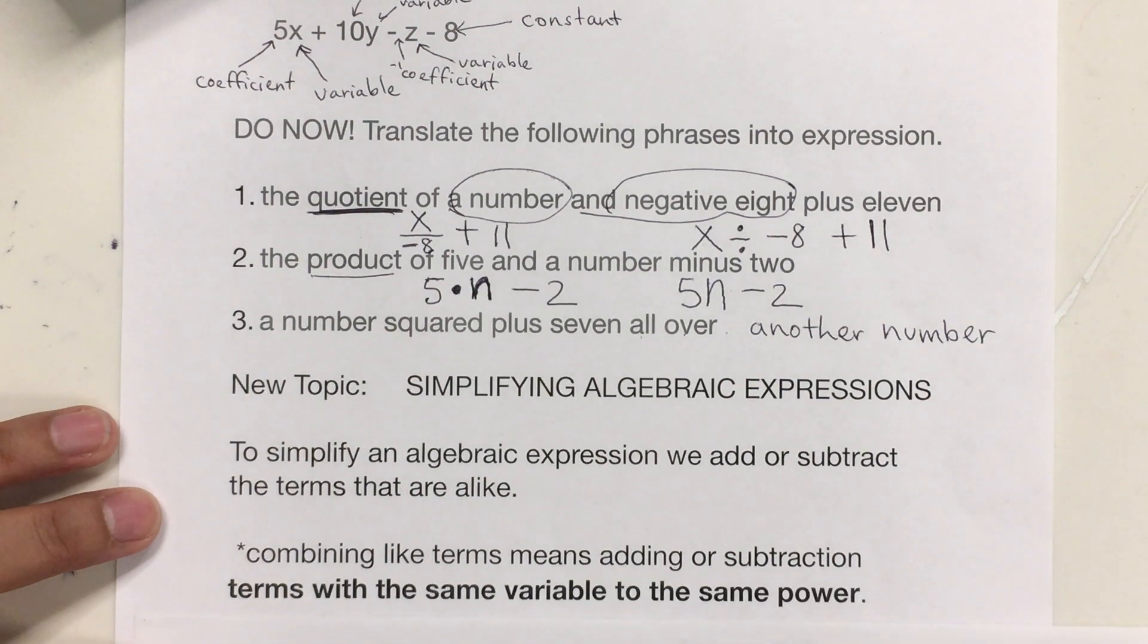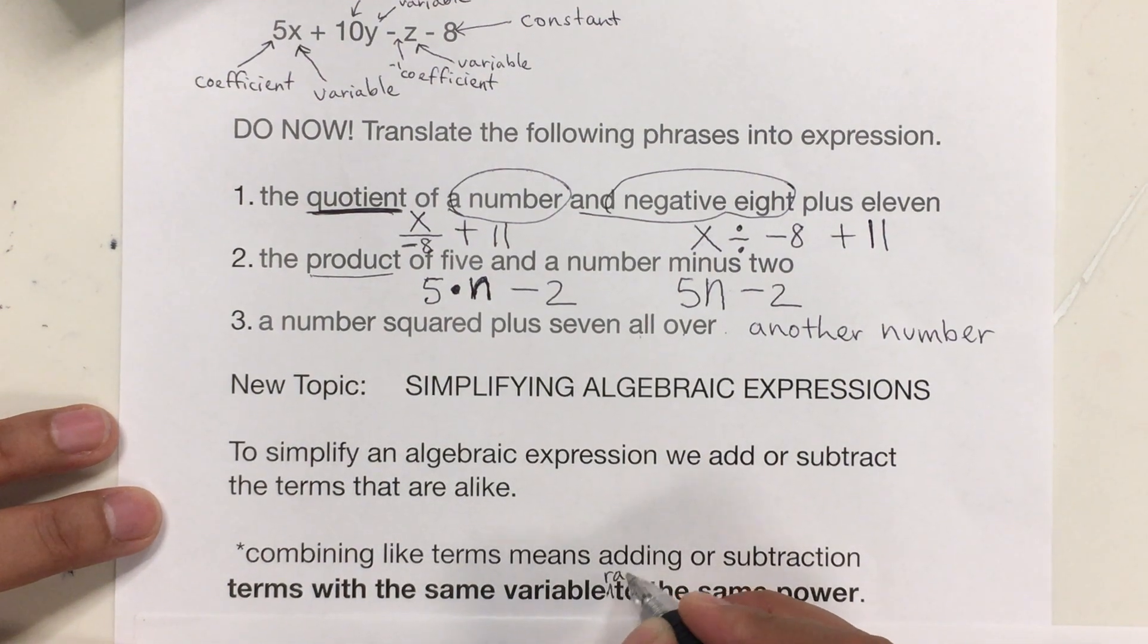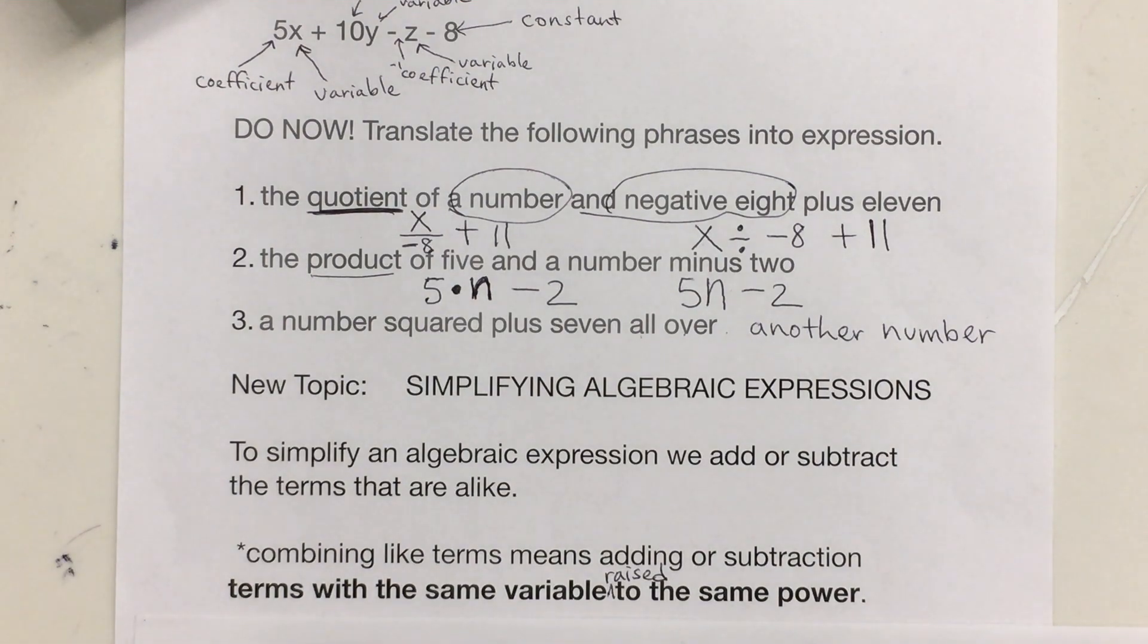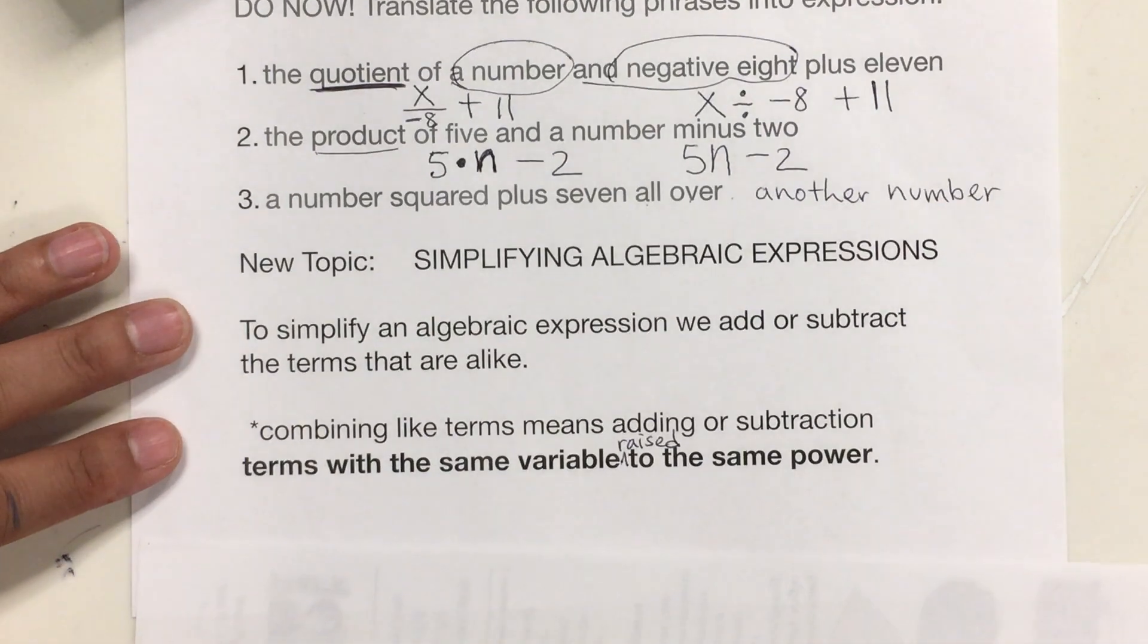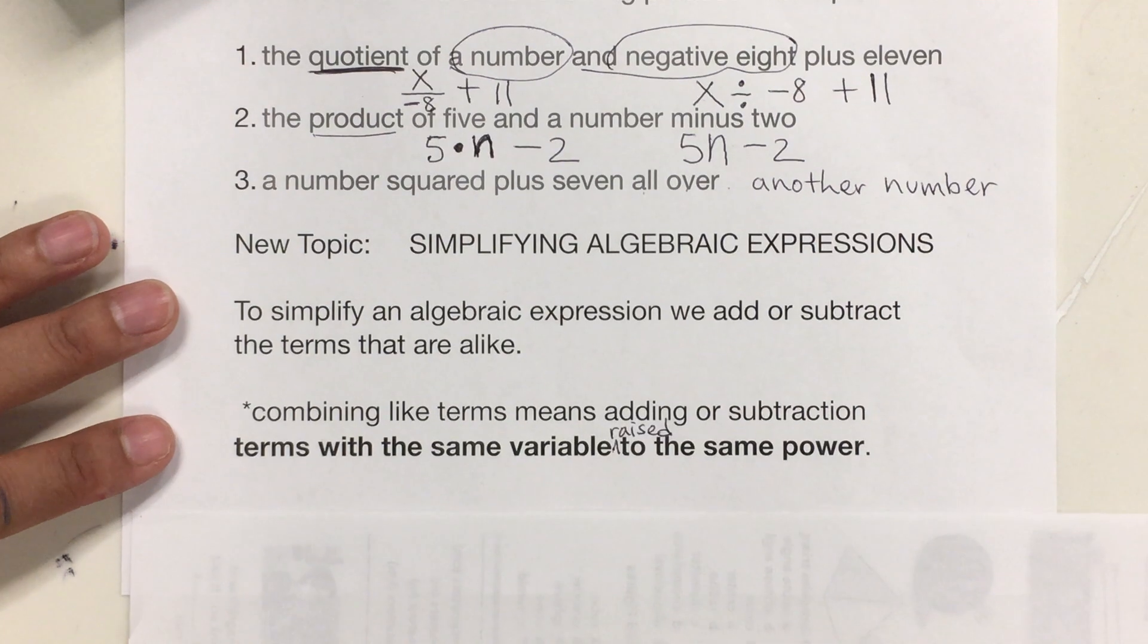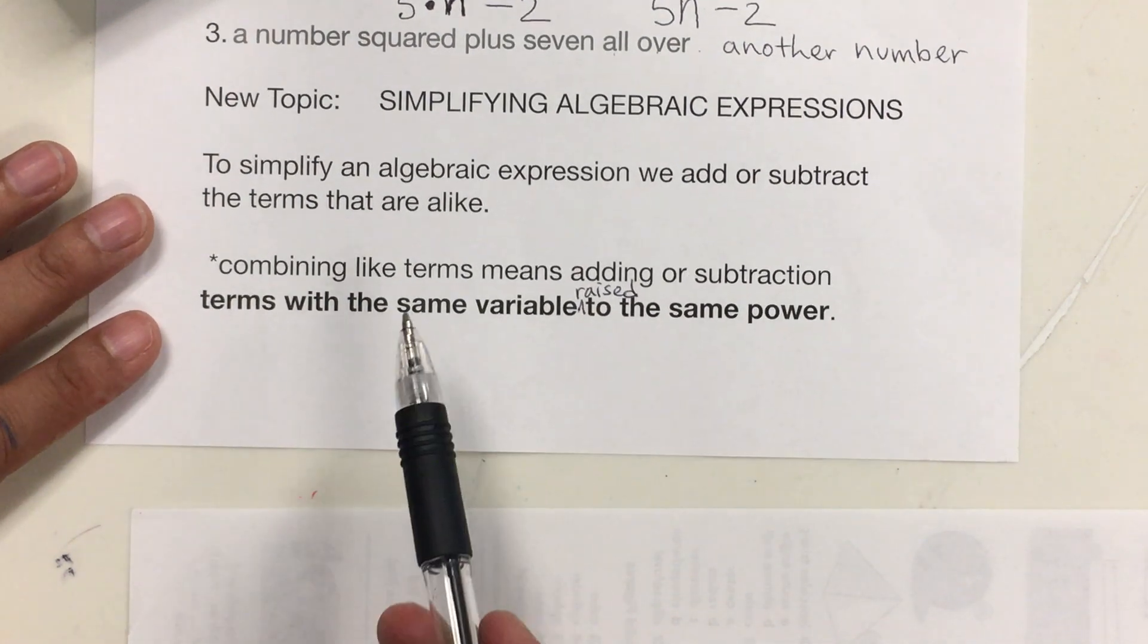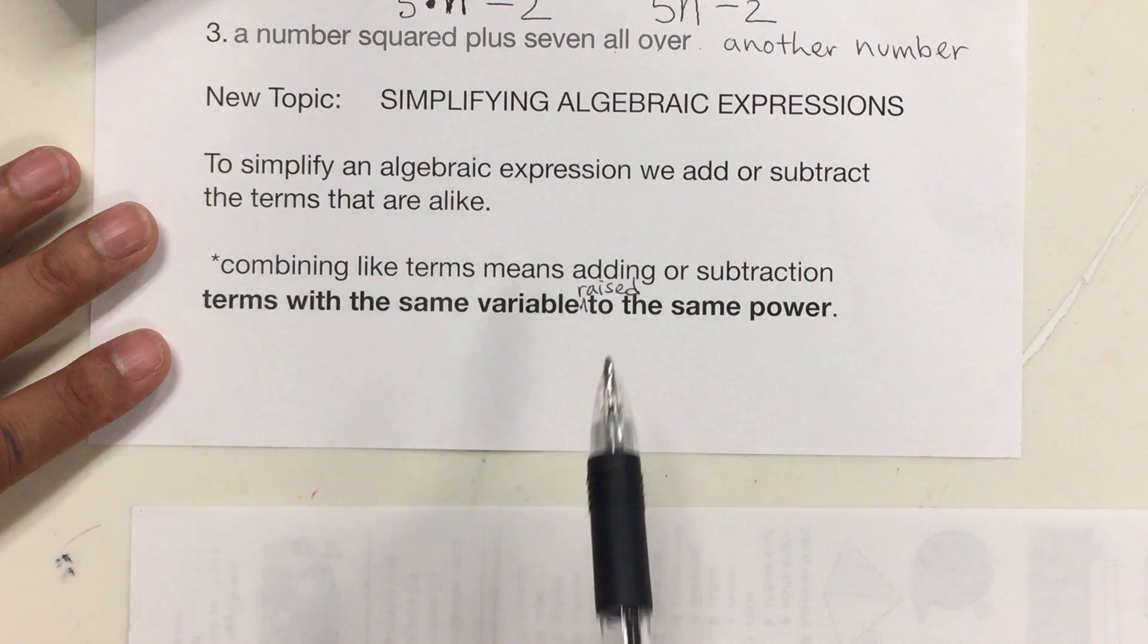it says that to simplify an algebraic expression, we have to add or subtract the terms that are alike. And what are like terms? Combining like terms means that we're putting together, and it's by addition or subtraction, terms with the same variable raised to the same power. They have to have the same variable, and they have to have the same exponent. So, that's what we're going to be doing today. Combining like terms.